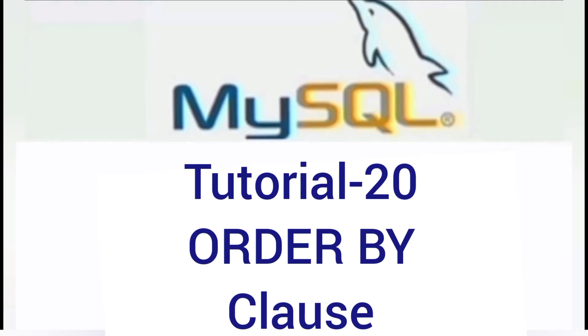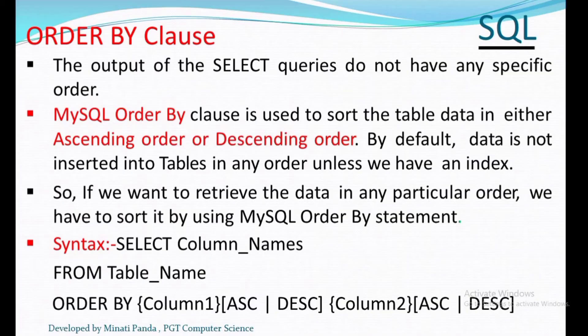Hello everyone, welcome to my channel. Today we will discuss the ORDER BY clause in MySQL. As we know, the output of SELECT queries does not have any specific order. The MySQL ORDER BY clause is used to sort the table data either in ascending order or in descending order. By default, it will be in ascending order. If we want to retrieve the data in any particular order, we have to sort it by using the ORDER BY clause.